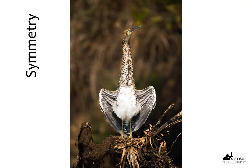Symmetry is an exception to the usual rule of thirds. We don't necessarily want to put all our images bang in the middle, but if they happen to be largely symmetrical, then we do. A classic example might be a reflection in water — we can put the horizon right in the middle. You can also do the same vertically, as with this juvenile rufescent tiger heron. It's not quite perfectly symmetrical, but the way it's holding its wings and neck is symmetrical, so that's why I chose to centre the subject.